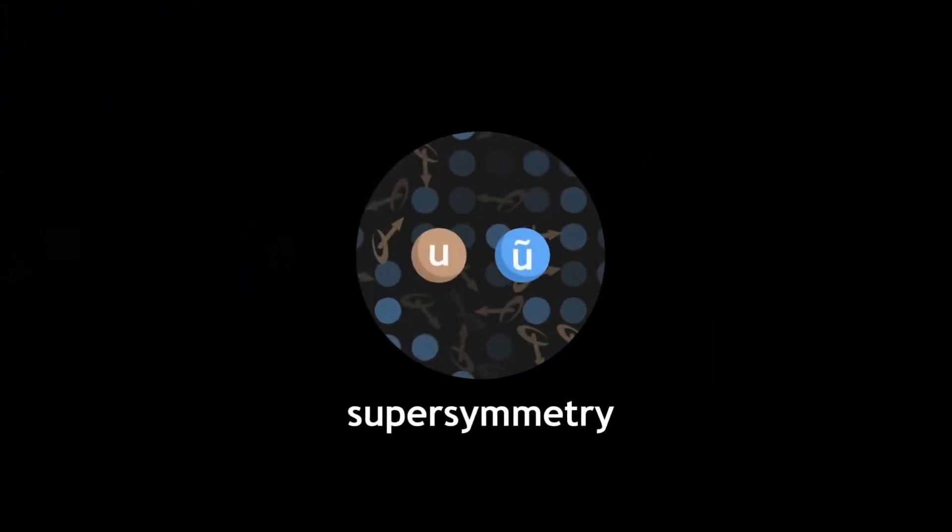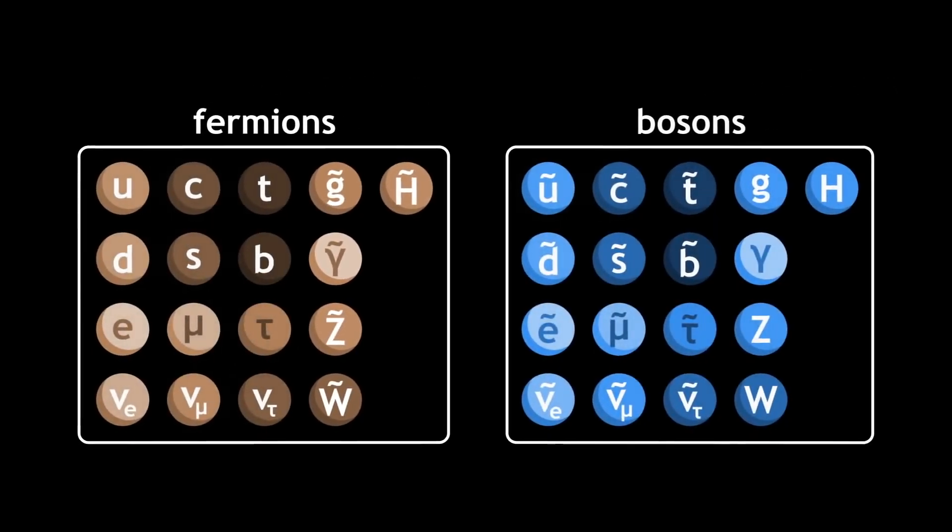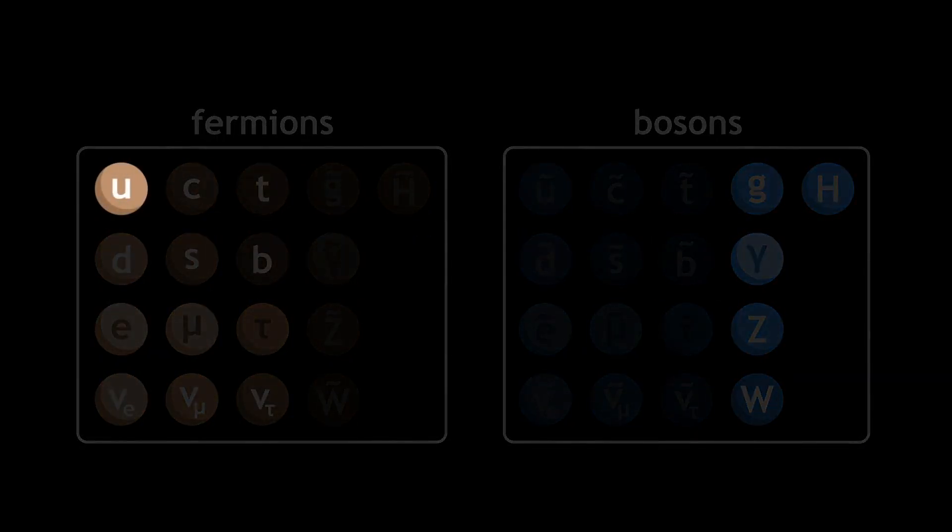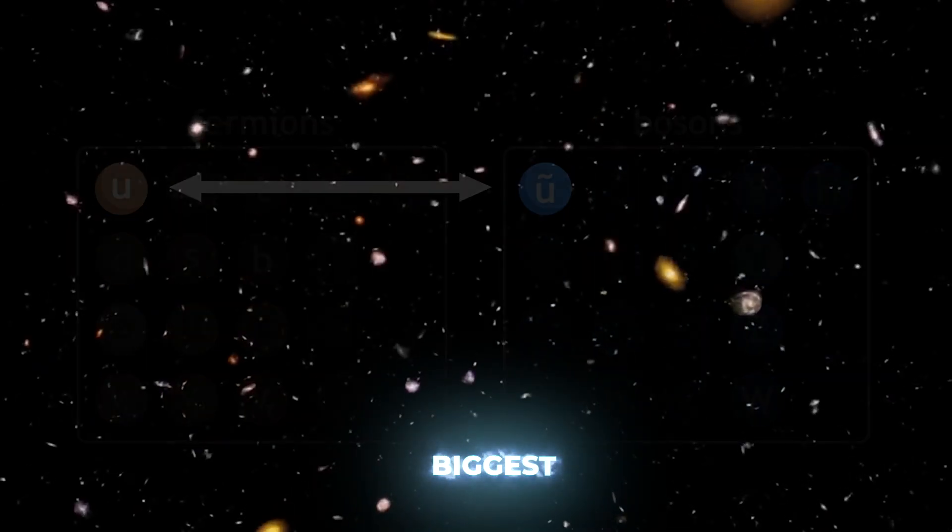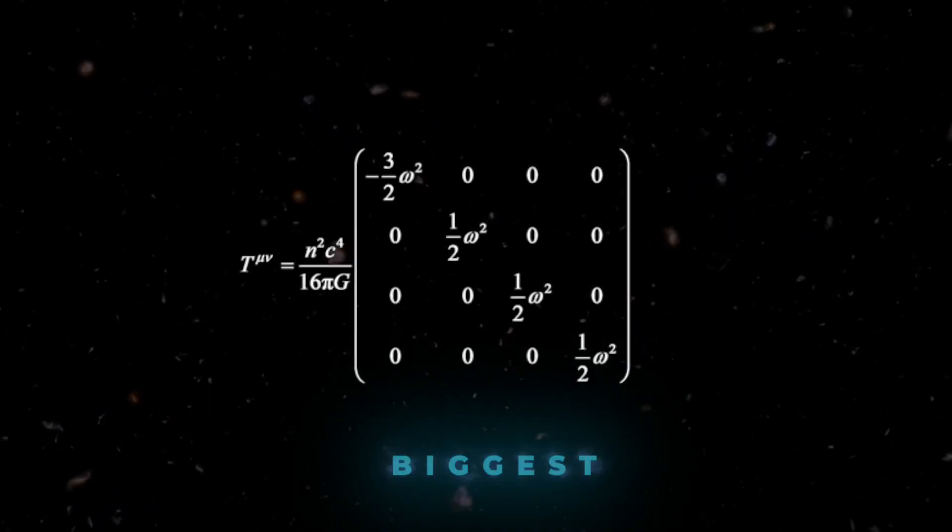Supersymmetry is one extension of the standard model that's been introduced to try and fill several of these gaps. Supersymmetry predicts that every particle within the standard model has a partner particle which would solve one of the biggest problems currently plaguing this theory, fixing the mass of the Higgs boson.